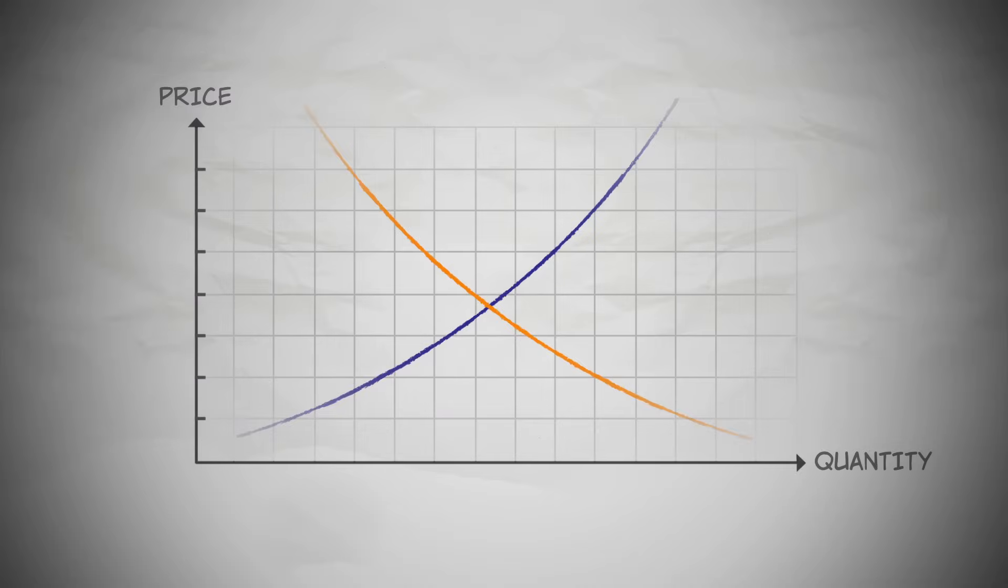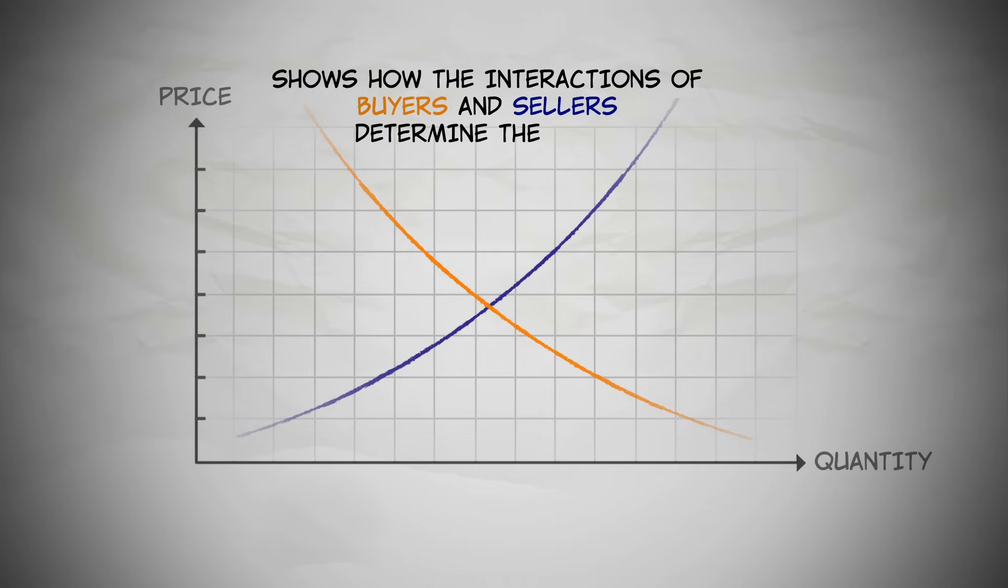We know from previous lessons that the demand curve and the supply curve show how buyers and sellers respectively respond to changes in the price of a good. In this lesson, we'll show you how the interactions of buyers and sellers determine the price.